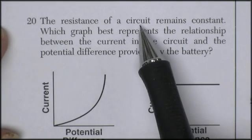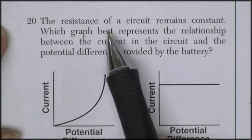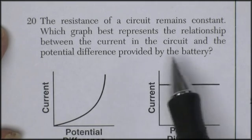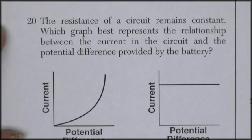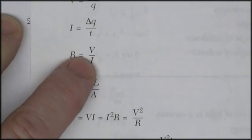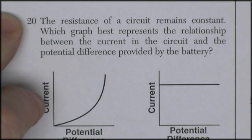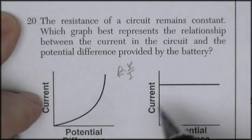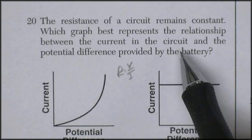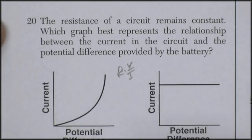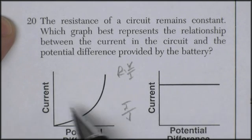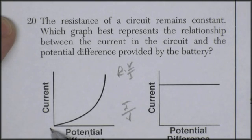Question 20. The resistance of a circuit remains constant. Which graph best represents the relationship between the current in the circuit and the potential difference provided by the battery? Well, let's see. Resistance is voltage over current. The resistance remains constant, which means if I've got a current versus potential difference graph, remember a graph is basically a division problem.